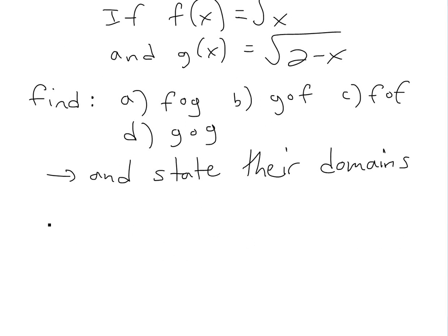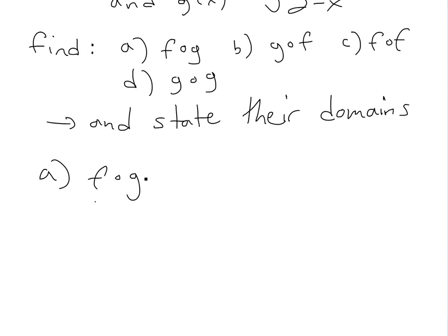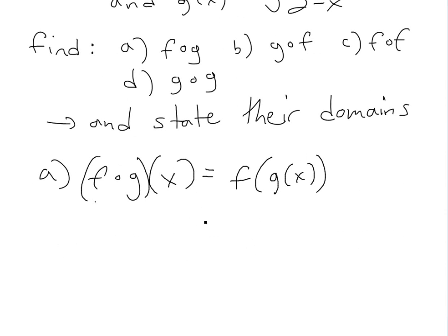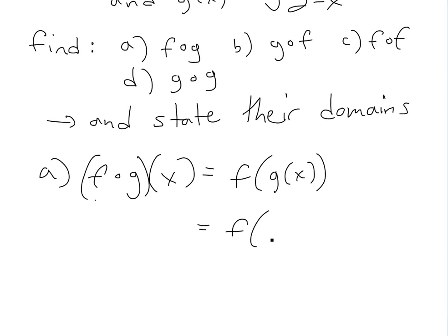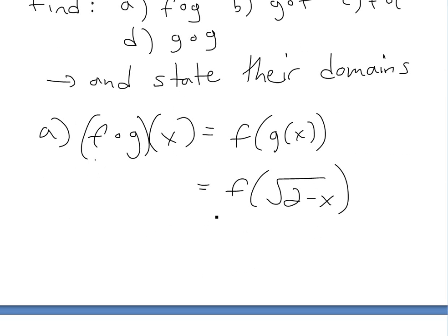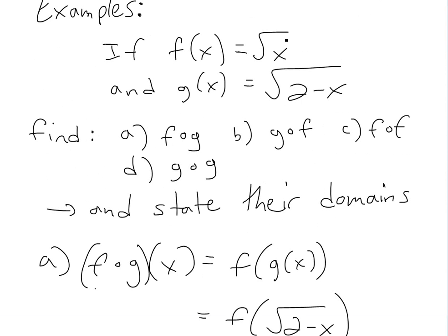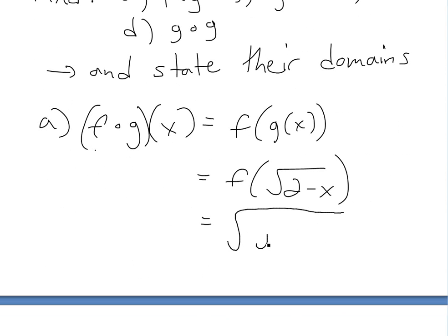Let's look at part a, which is f circle g. Recall from the definition, f circle g of x equals f of g of x. We look at the right side first, which is g of x, and g of x equals the square root of 2 minus x. So this is just going to be f of square root of 2 minus x, and we plug this inside f, which is the square root of x.